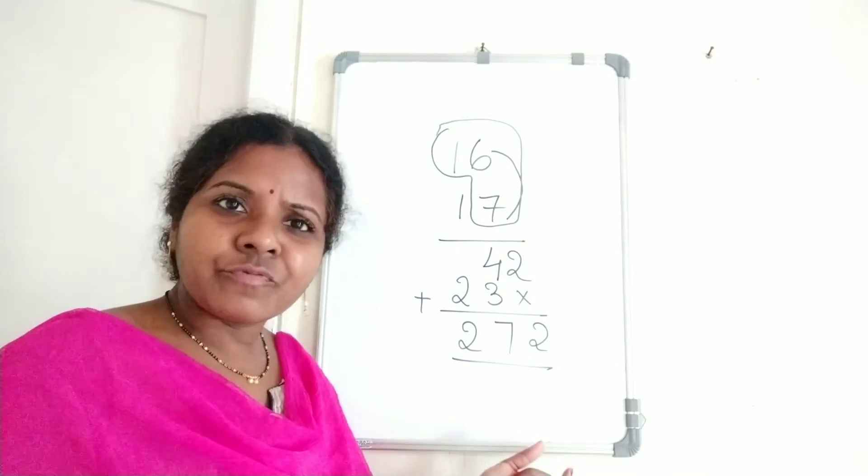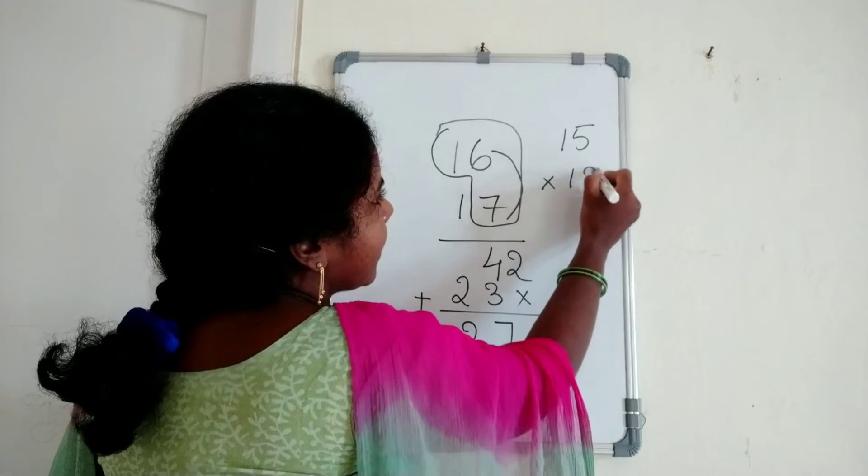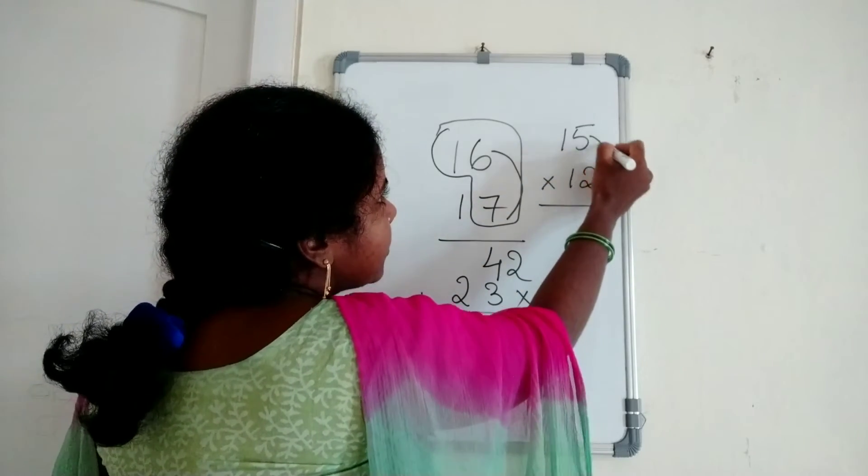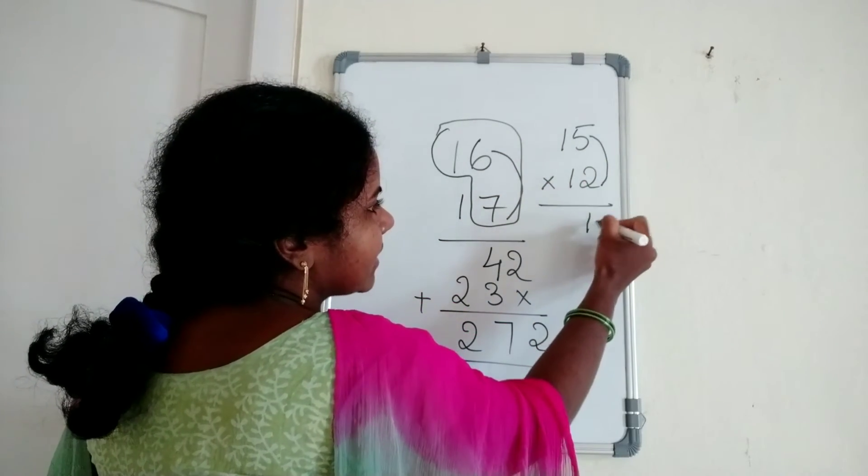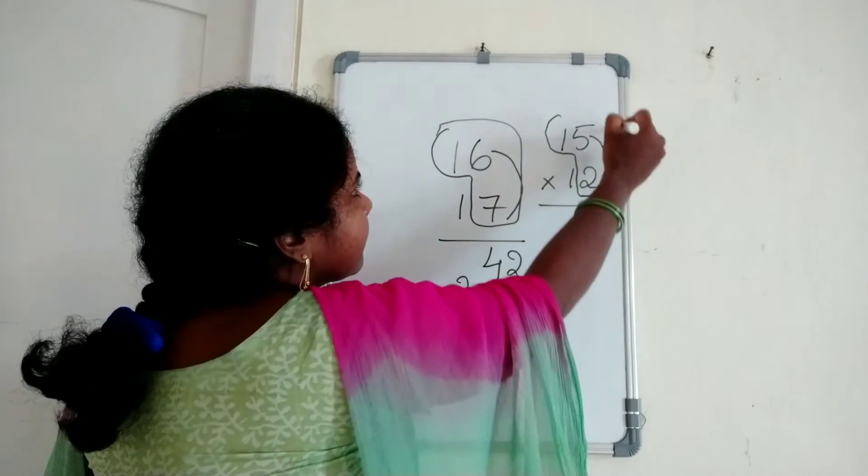15 times 12. First, multiply 5 times 2, just write 10. Then 15 plus 2.